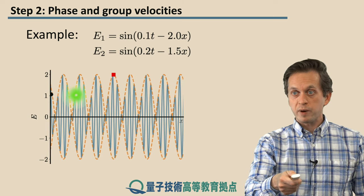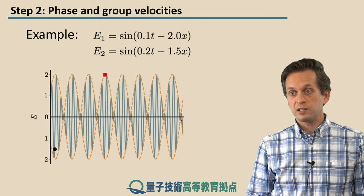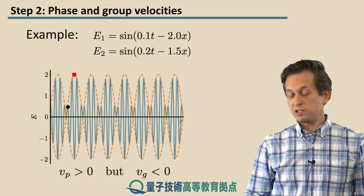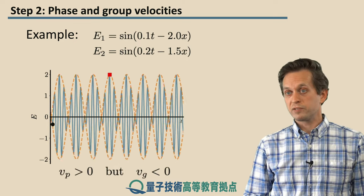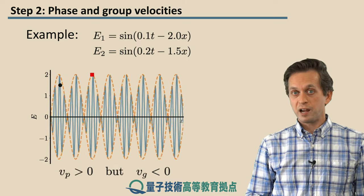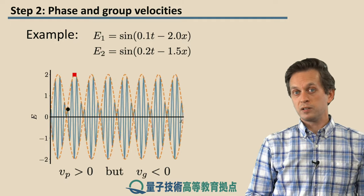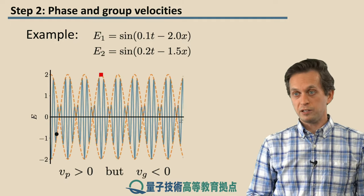So you can see that you can have a lot of fun with the group and phase velocities. There are many different scenarios depending on ω1 and ω2 and k1 and k2.